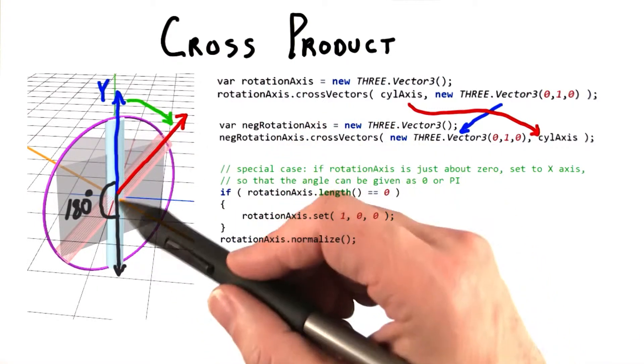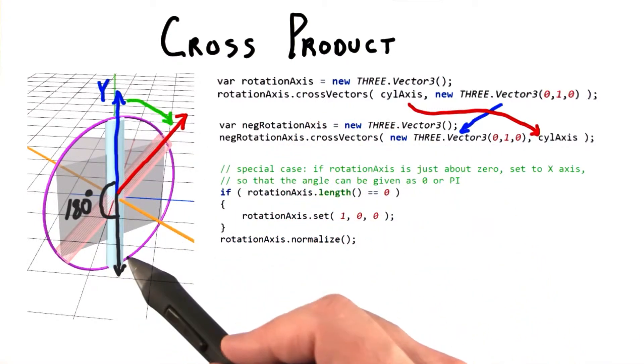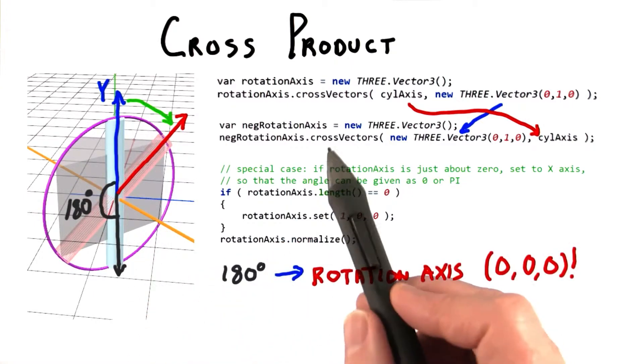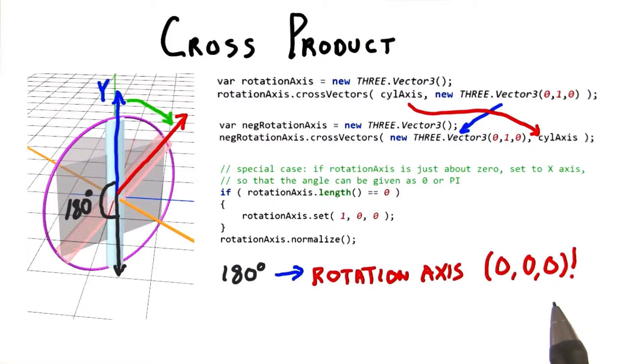If they point in exactly opposite directions, then you need to rotate 180 degrees. However, the rotation axis you'll get back from the cross product is actually 0, 0, 0, which is no axis at all. At this point, you basically need to choose some arbitrary axis that is perpendicular to your vectors and use that for rotation, or just form the rotation matrix directly.